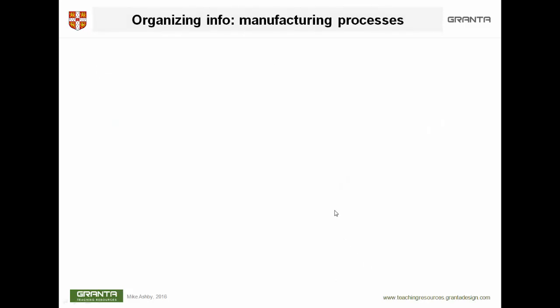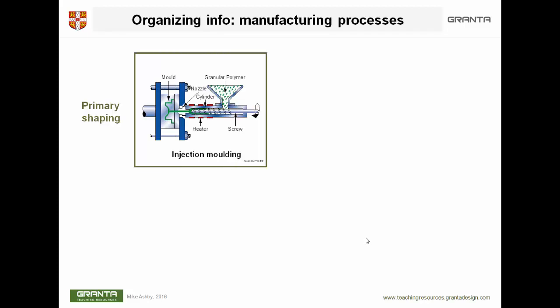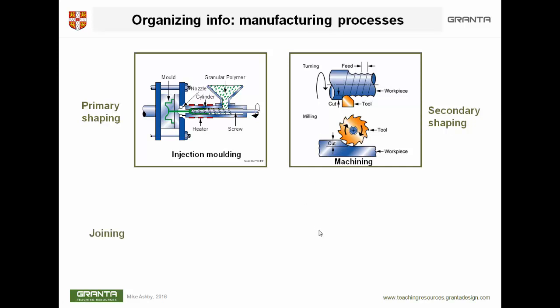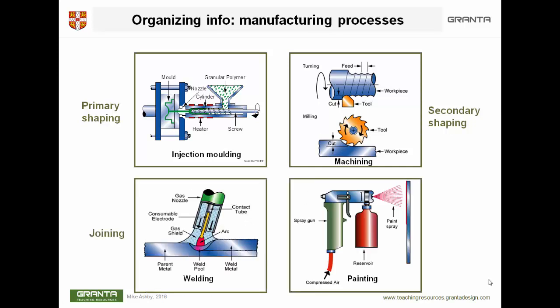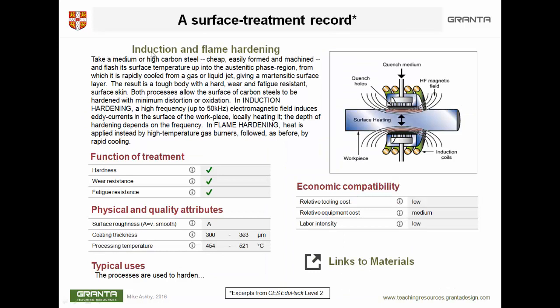What does a process record look like? Here are some images conveying what those different families look like: primary shaping like injection moulding, secondary shaping like machining, joining processes like welding, and surface treatment processes like painting or plating. Here's what a record itself looks like — this is part of a record for a surface treatment process, in this case surface hardening, flame hardening. There is some numeric data: what can you use it for, how big a part can you treat, what are the economics of it, and there is a description.